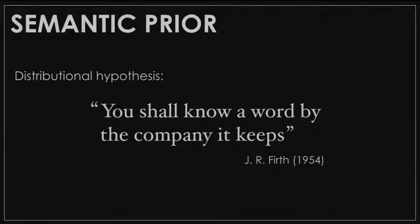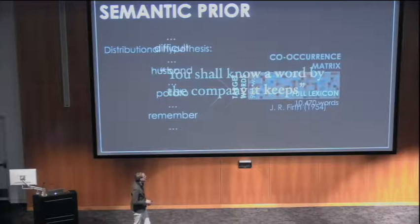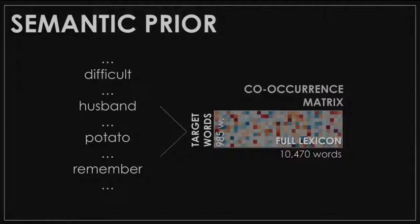There's a large tradition in computational linguistics of pulling out these kinds of relationships automatically from a lot of text data — this is the distributional hypothesis: you shall know a word by the company it keeps. We look across a big corpus of text and ask how related are certain words to each other, and use that as a prediction of how related they might be in the brain. The way we actually do this is we build a feature set for each word where we count how often they co-occur with a set of 985 target words — like difficult, husband, potato, and remember. For every word in the stories, we get a score saying how similar it is to each of these target words, and we use this to measure semantic similarities between words in our lexicon.